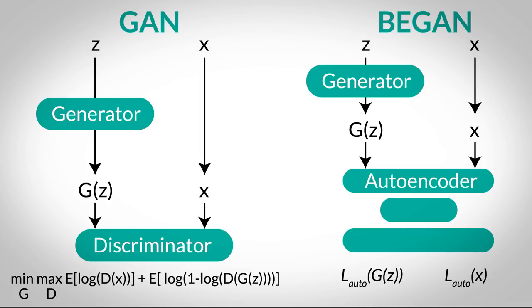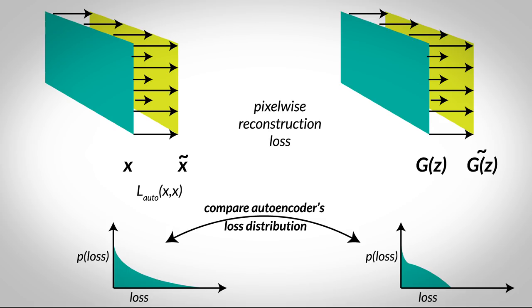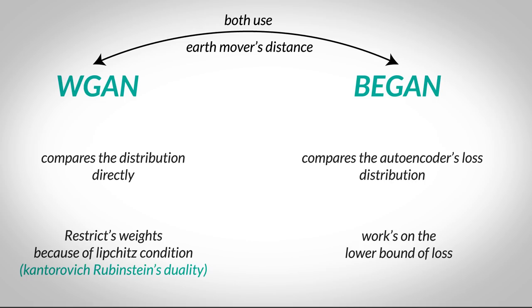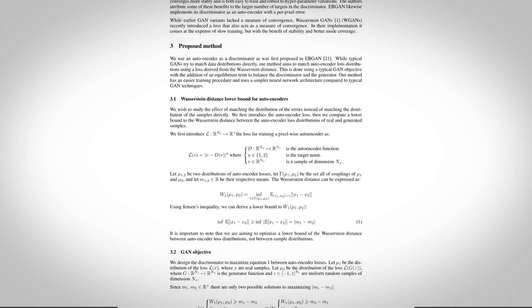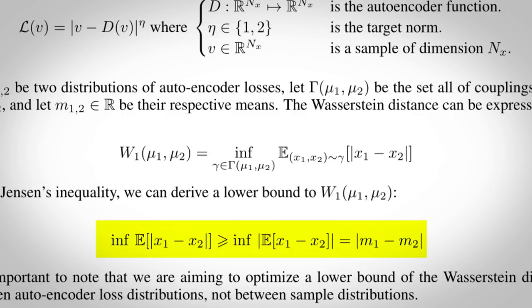Now in BEGAN, we are considering encoder-decoder as a discriminator. The objective here is to make the autoencoder loss distribution of real and fake images closer in terms of Earth Mover's distance. This is a kind of a hack to match the distributions of real and fake images. And moreover, the reconstruction loss affects each pixel directly. Now instead of enforcing Lipschitz conditions like WGANs, it considers the lower bound of distance and works with it. But do note, in WGANs, we meddle with the distance between the image distribution, but here we are meddling with autoencoder losses. The lower bound is given by the absolute difference between the mean of the reconstruction loss distributions.